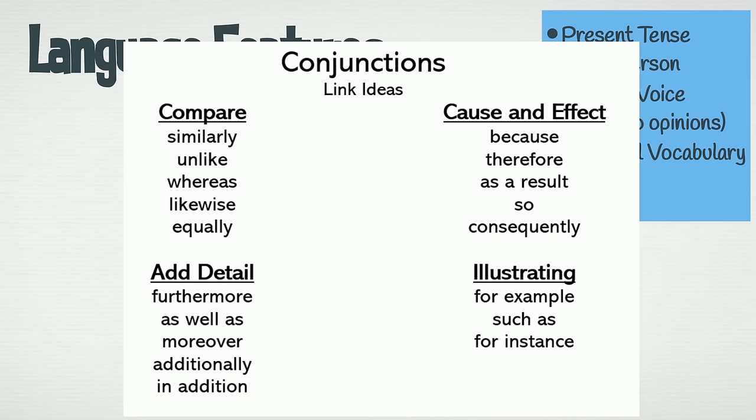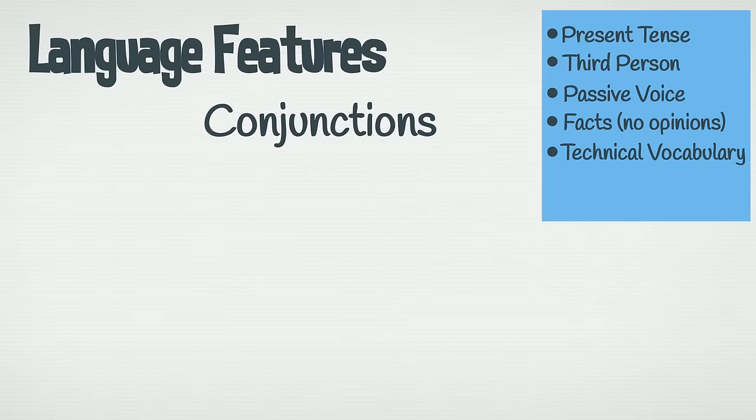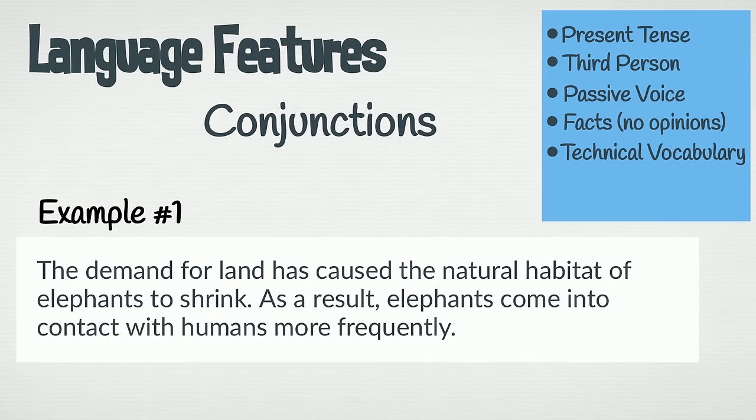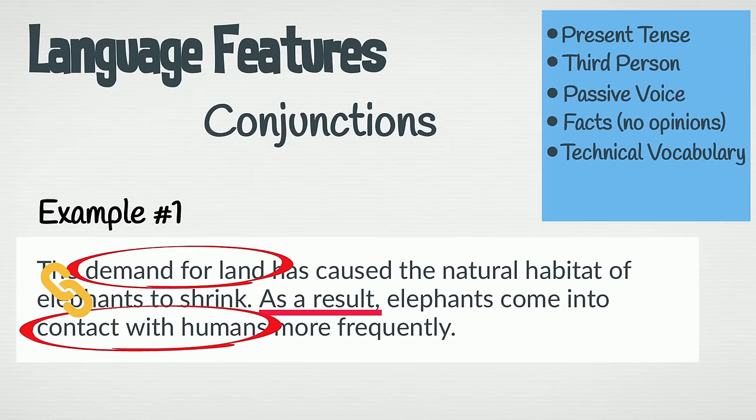We're going to look at three passages taken from three different information reports. Each will show the use of a different conjunction. Here is the first example. The conjunction as a result has been used. This conjunction links the demand for more land with the fact that elephants are coming into contact with humans more often.